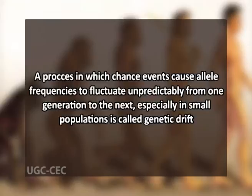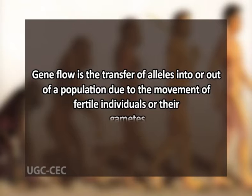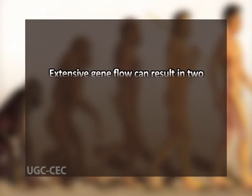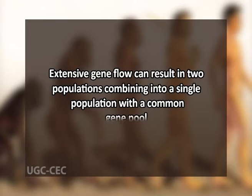Natural selection and genetic drift are not the only phenomena affecting allele frequencies — allele frequencies can also change by gene flow, the transfer of alleles into or out of a population due to movement of fertile individuals or their gametes. Because alleles are transferred between populations, gene flow tends to reduce the genetic differences between populations. If extensive enough, gene flow can result in two populations combining into a single population with a common gene pool. Alleles transferred by gene flow can also affect how well populations are adapted to local environmental conditions.